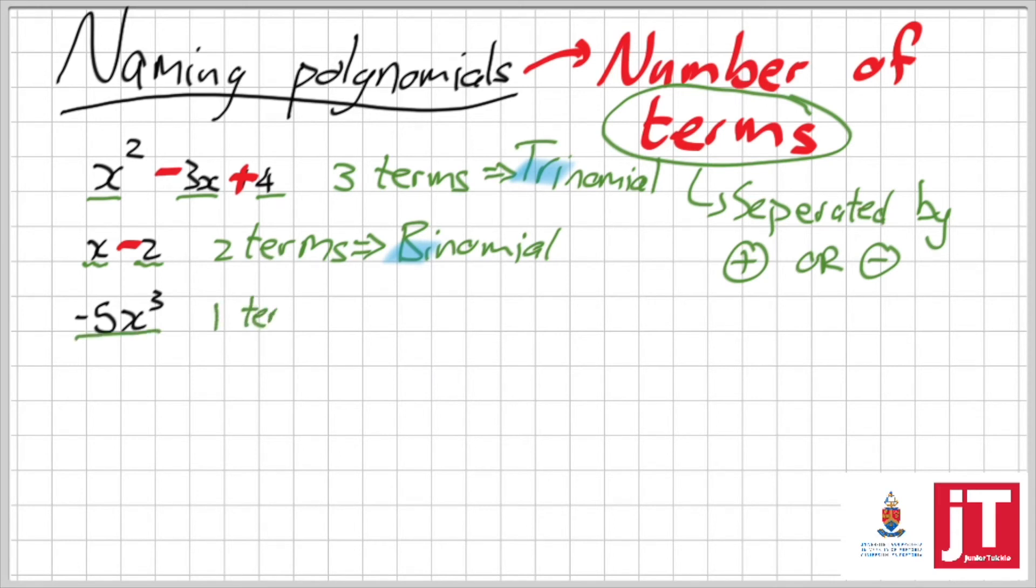Last and definitely not least, negative 5x to the 3. Well, that is a one term. But why, sir? Why? There's then a 5 and an x. Yes, but in between them, there's a times. There isn't a plus or a minus. So therefore, it's a one term or a monomial.